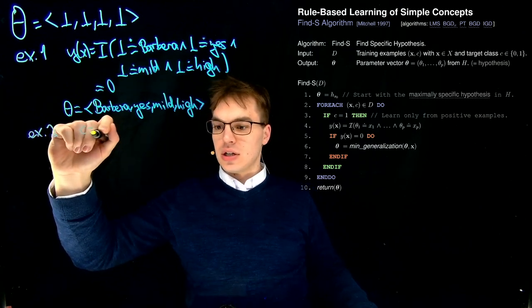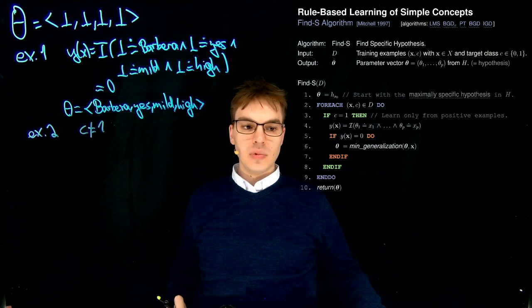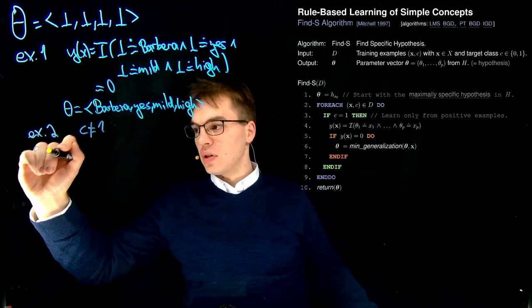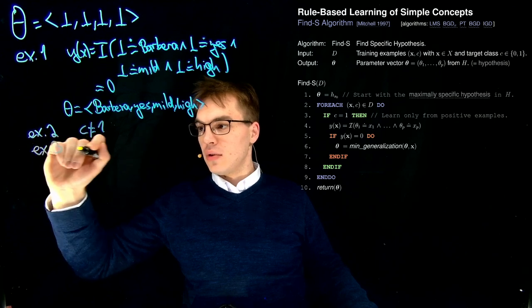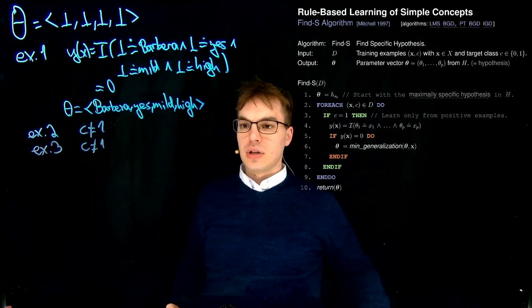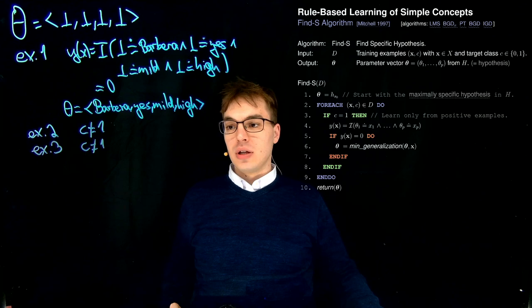because we don't have an award-winning wine in our second example. We can just write, c is not 1, and we skip this iteration. For example 3, the same applies. We don't have 1, we don't have an award-winning wine, and we only want to learn in this FindS algorithm from our positive examples.